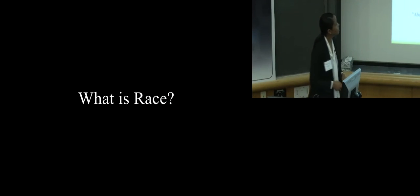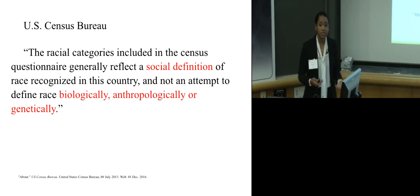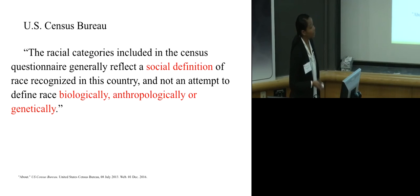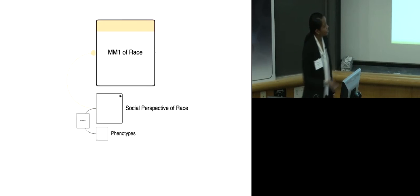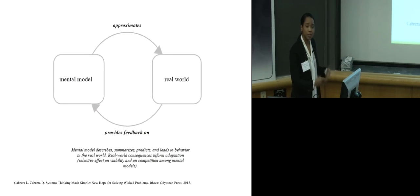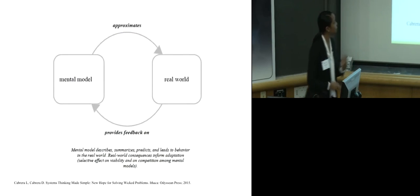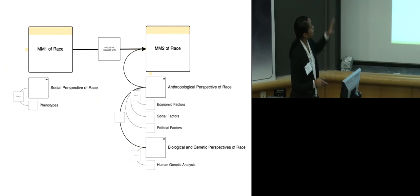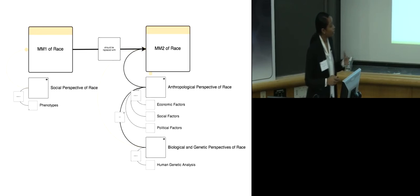So what is race? Well that really depends on your perspective. The United States Census Bureau, when attempting to explain how consumers typically fill out the census document, says that the racial categories generally reflect the social definition of race recognized in this country and not an attempt to define race biologically, anthropologically, or genetically. Now the problem with this social definition of race, as we saw in the sorting activity based on phenotypes, is that our mental models that we employ when we participate in this racial sorting or when we try to categorize people often fails to approximate reality or the real world. So I argue that mental model one of race, which captures a social perspective of race based on phenotypes, should be replaced by mental model two of race, which captures an anthropological perspective and biological and genetic perspectives on race.